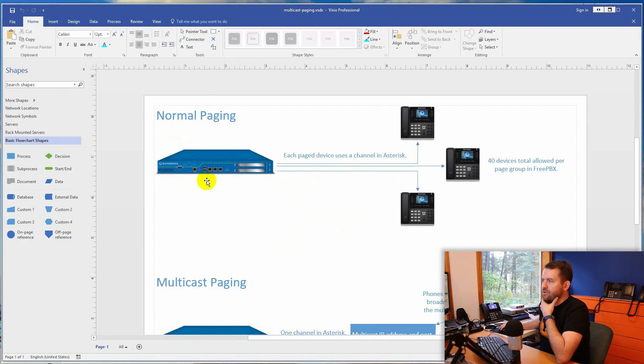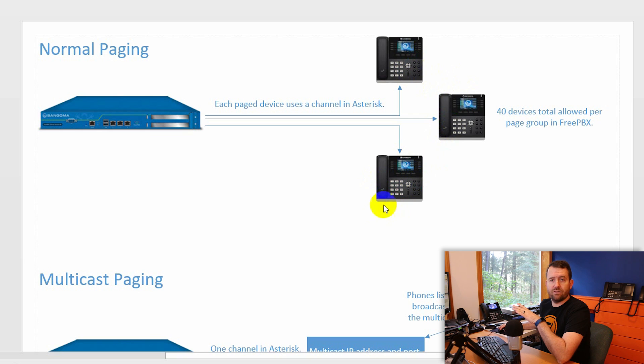Here is a quick Visio mock-up of normal paging. You have your FreePBX server and phones or devices in a page group — these can be not only phones but also regular SIP-enabled pagers. The way a page works is that FreePBX creates as many channels as you have devices in that group. It's basically creating a new call to every single one of those devices simultaneously. Because of this, FreePBX limits page groups to a maximum of 40 devices.